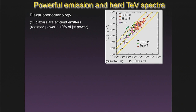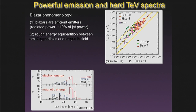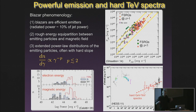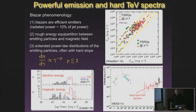There are three properties of blazar jets to keep in mind. First, blazars are efficient emitters: about 10% of the jet power is emitted as radiation. Second, analyzing the spectral signature, we often find a rough equipartition of energy between the emitting particles (electrons) and the magnetic field. Third, the broadband spectral energy distribution is often characterized by a very extended distribution of photons with a hard slope — the number of particles differential in energy goes like Lorentz factor to the minus p, where p can be smaller than two. Hard particle distributions are required to explain blazars.